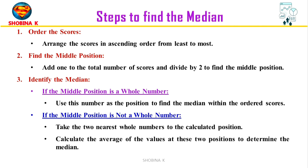To identify the median, check if the middle position is a whole number or not. If the middle position is a whole number, use that number as a position to find the median within the ordered scores. If the middle position is not a whole number, take the two nearest whole numbers on either side of the calculated position.